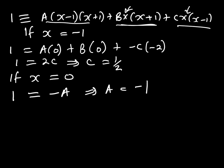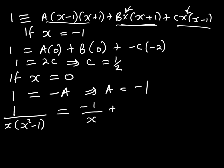Having found A, B, and C, we can now write our partial fraction. So 1 over x times x squared minus 1 equals negative 1 over x, plus 1 over 2 times x minus 1, plus 1 over 2 times x plus 1. We have resolved into partial fractions, but the question is about integrating — resolving was just a step towards what we wanted to do.